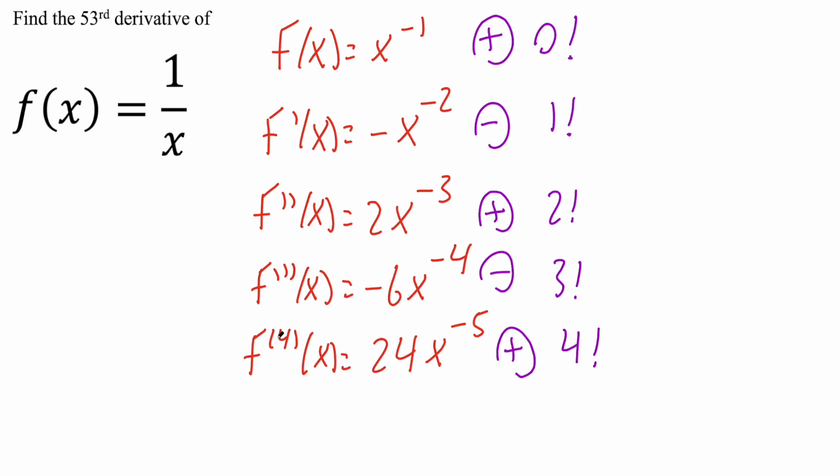So if you had the fourth derivative, you'd say 4 factorial to get 24. And if you notice, 2 and 4, they're both even, and you have a positive number. But we have the 53rd derivative. So that's an odd number, and that's going to fall into play like 3 and 1, which gives you a negative number.